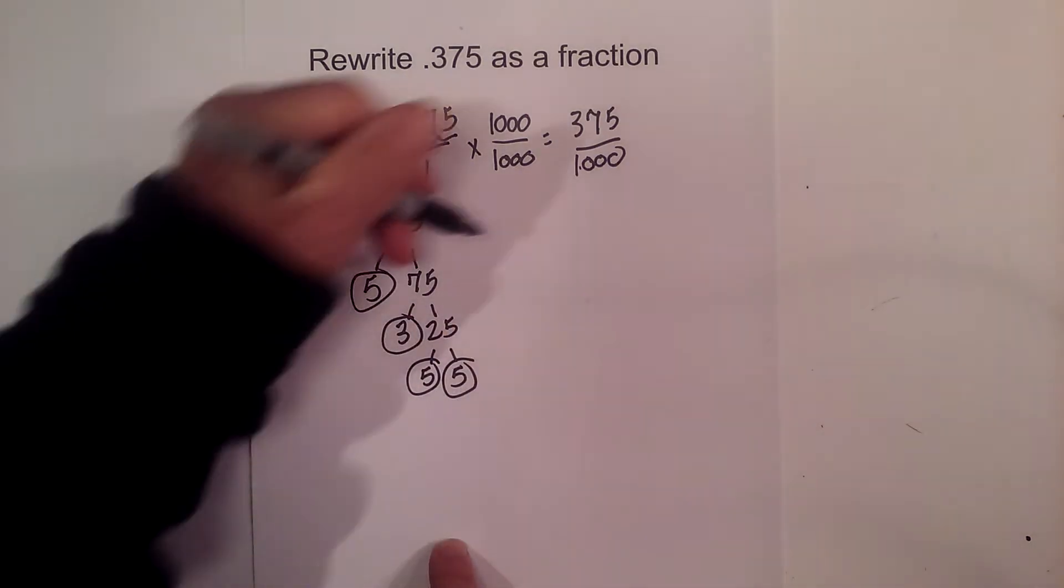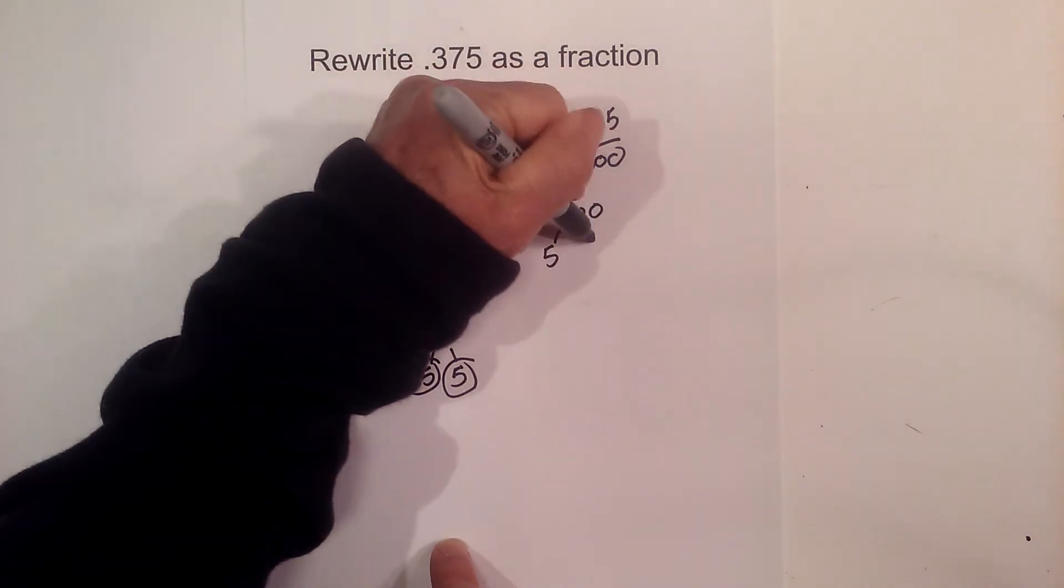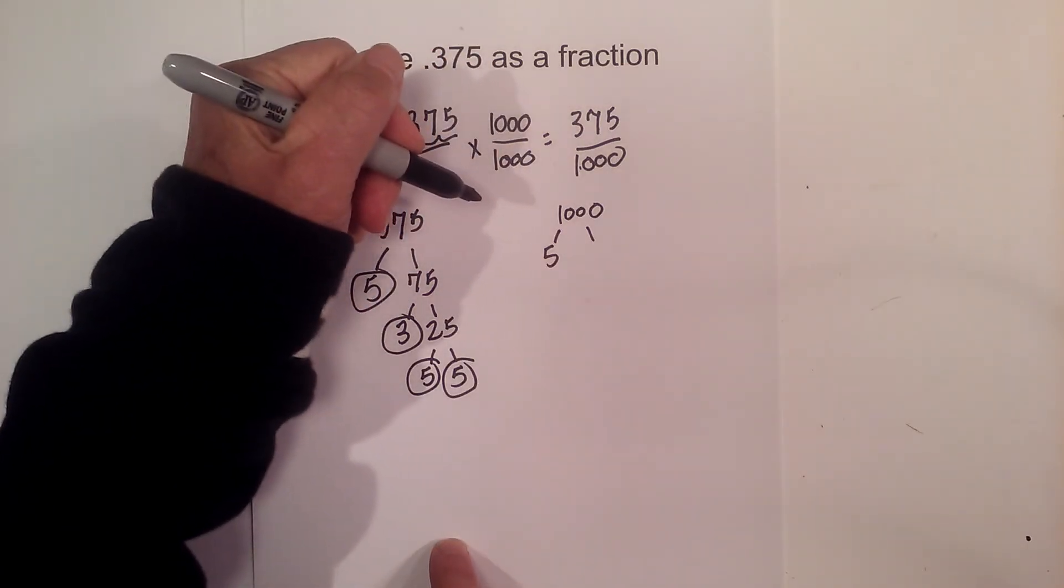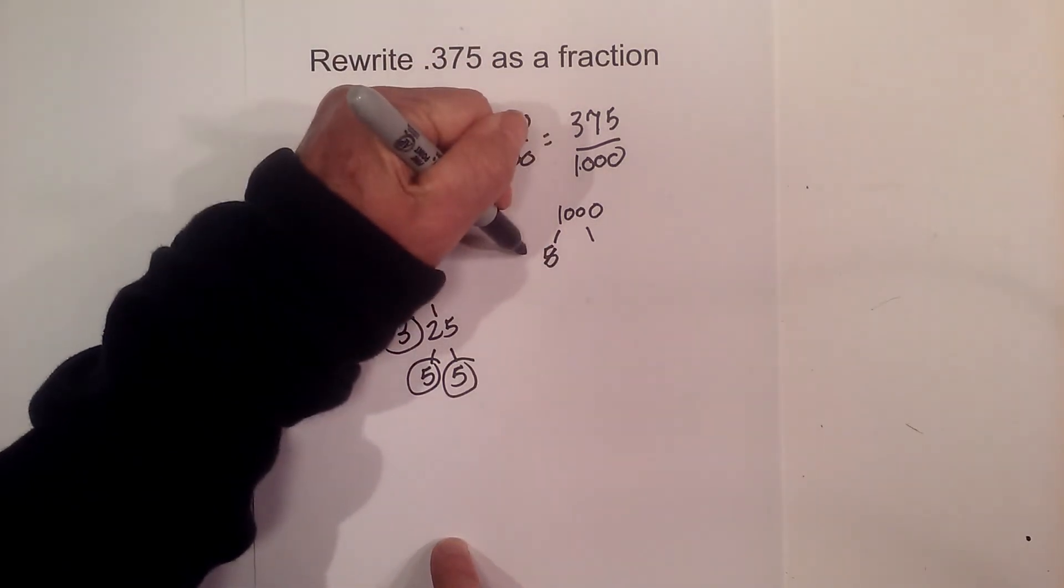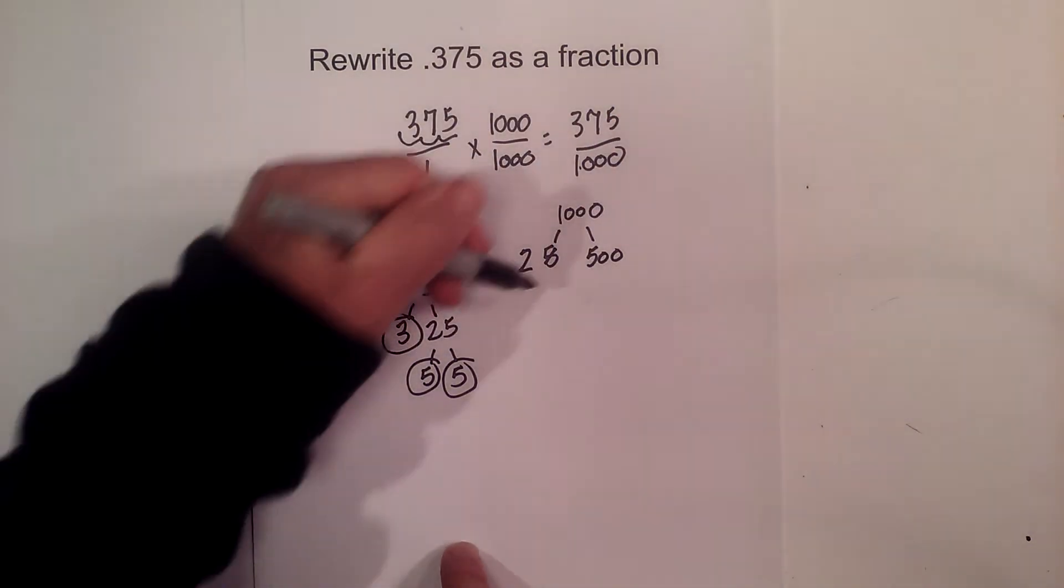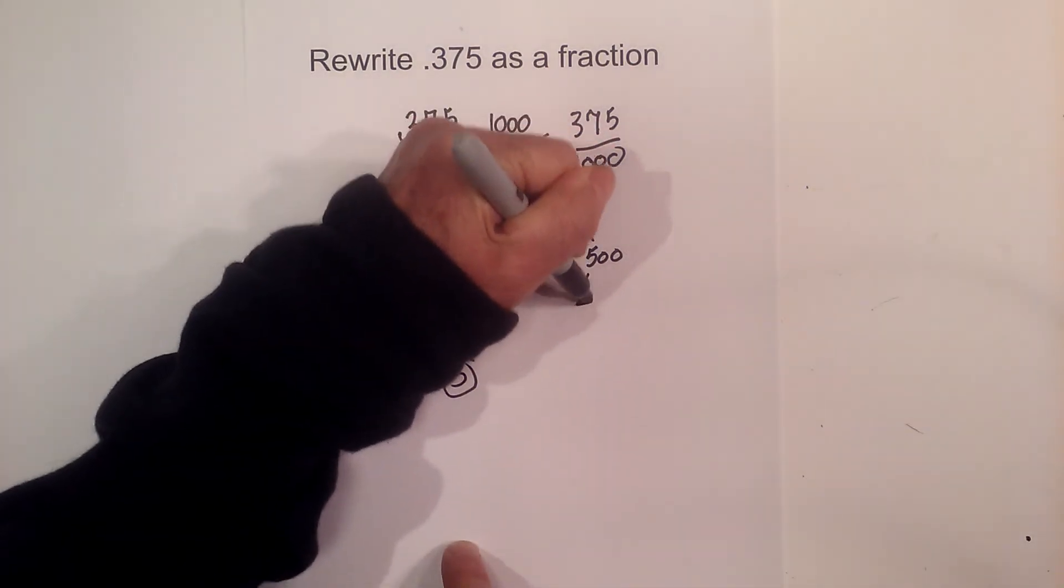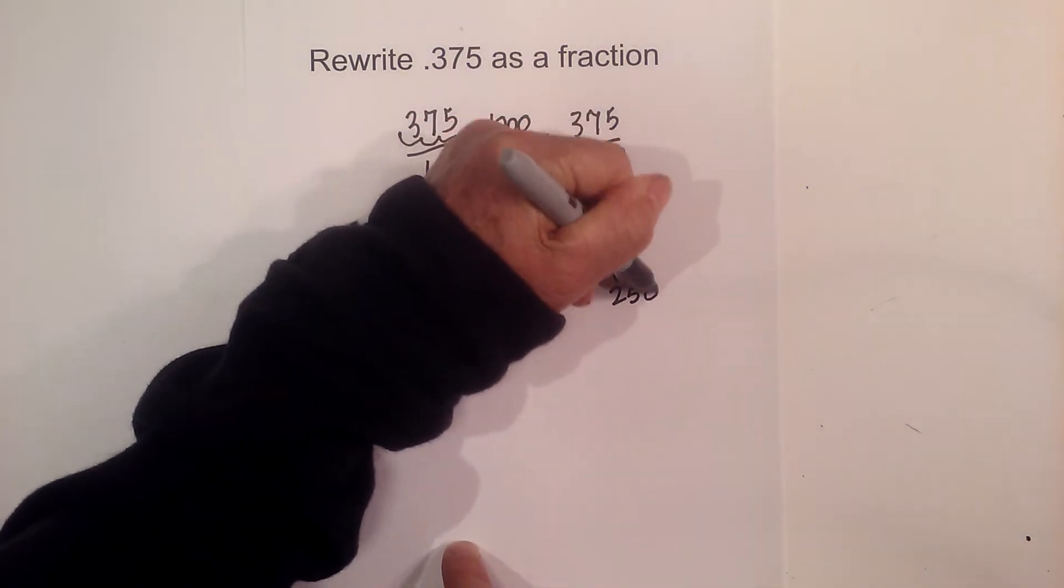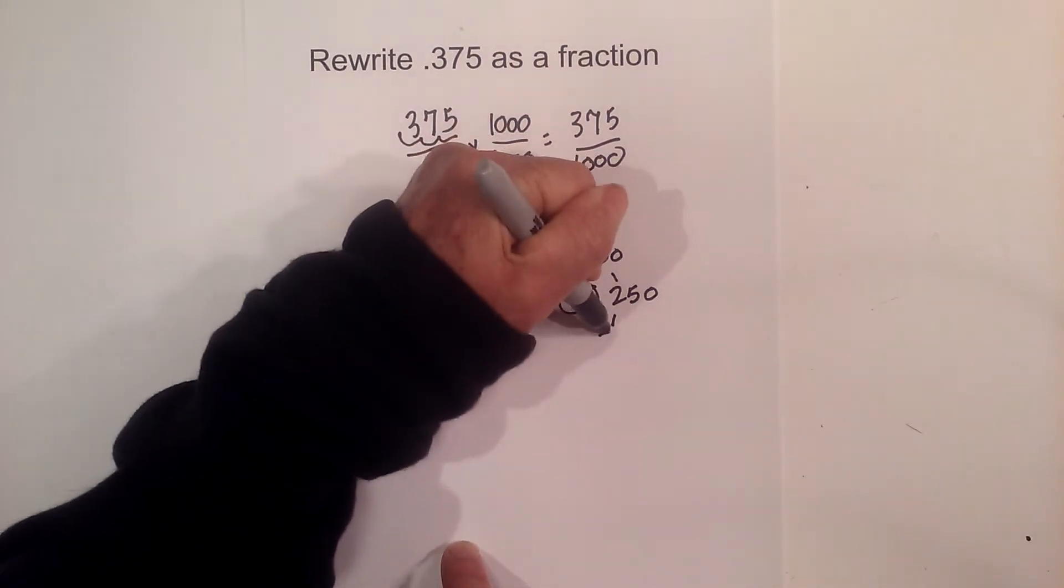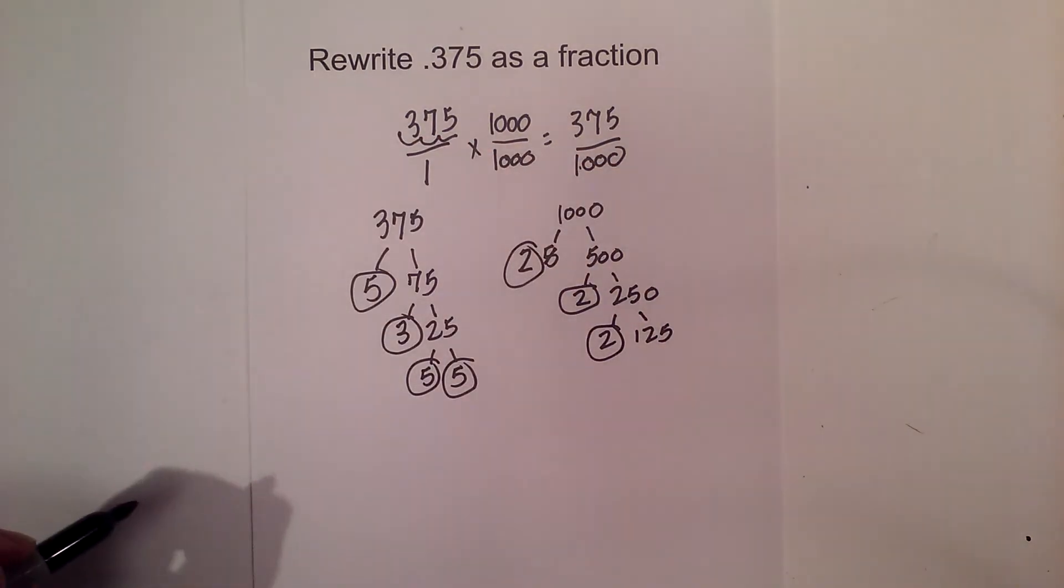For 1000, I can go ends in a 0, so I'll start with a 5. Or you could use 2. Why don't we go ahead and use 2? I think it's a little bit easier. 2 times 500 equals 1000. Circle the 2 because it is prime. And now 2 times 250 equals 500. Circle the 2 because it is prime. And 2 times 125 equals 250.